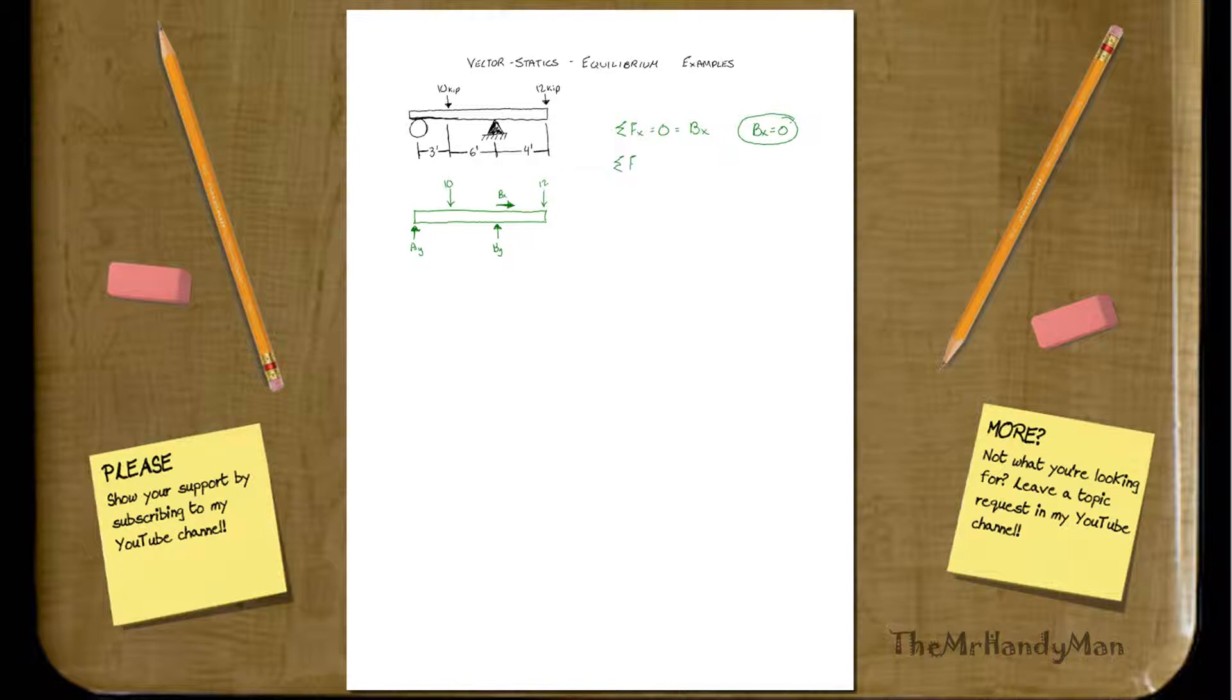So now, sum of F of Y, you're going to have AY plus BY minus 10 minus 12 equals 0. So, okay, well, that's two unknowns. We can't figure that out. We've got to go into the moments.